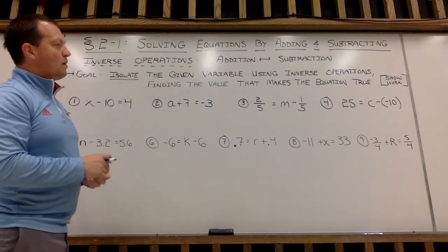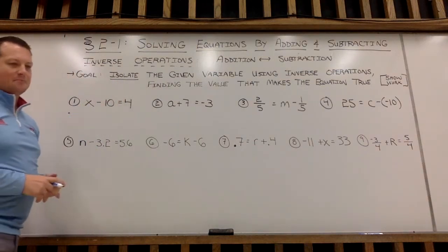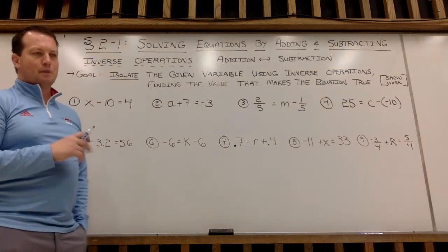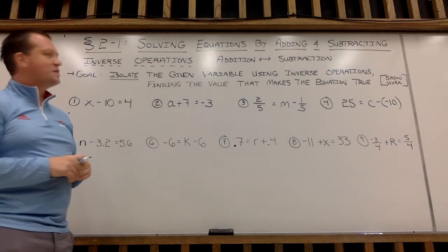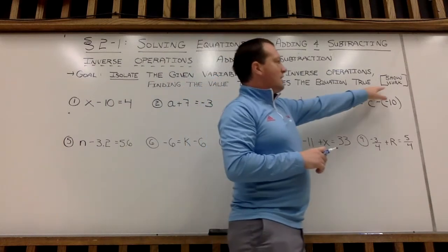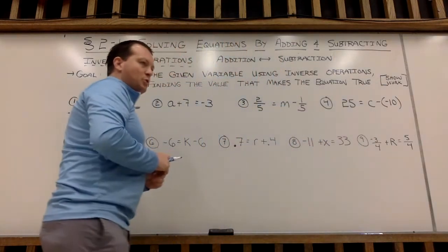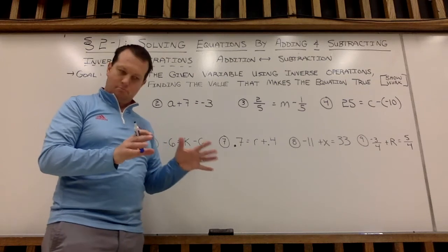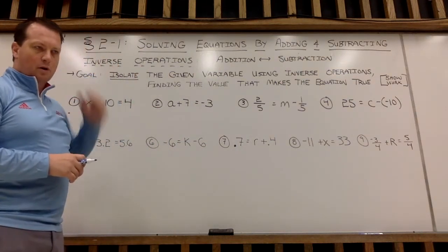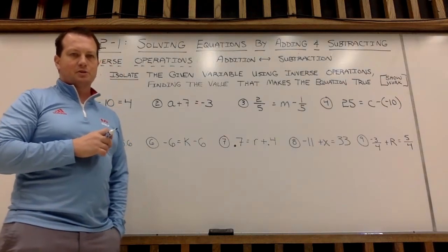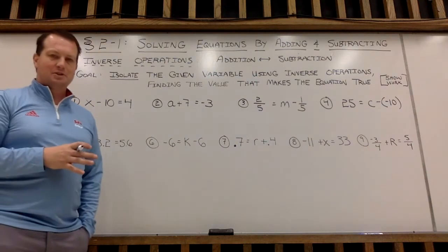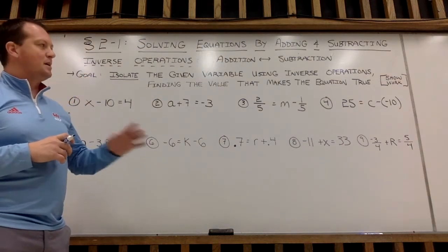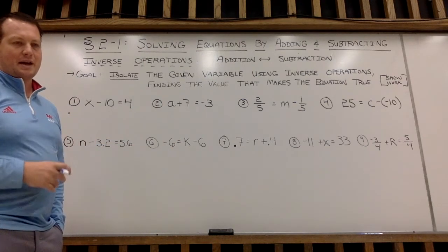My goal today is I want to isolate — that's the key word here. Isolate means to get by itself my given variable in order to solve the equation. And I'm going to find the numerical value that would make both the left and right side of the equations equal, makes a true statement. What we're really looking at today is making sure we show our work. Chapter 1, there was a lot of mental math. I said if you can put on your Nikes, just do it. But with Chapter 2 and beyond, we're going to need to show our work — writing down the problem, showing our inverse operations to get full credit. Today's examples are a little bit easier, but as we get into the chapter a little deeper, the examples aren't going to be able to be done in our head, so we want to be in good practice of showing our work and using the inverse operations.